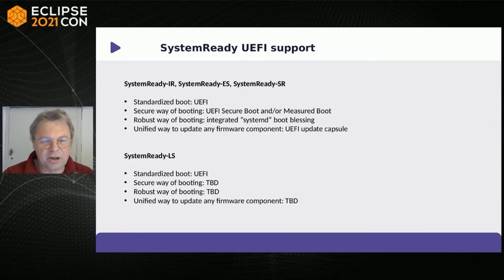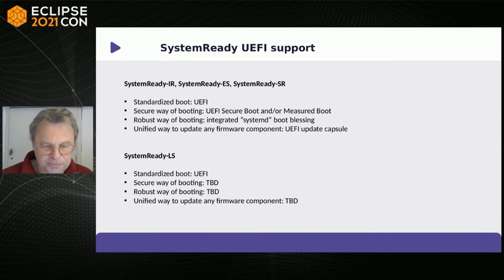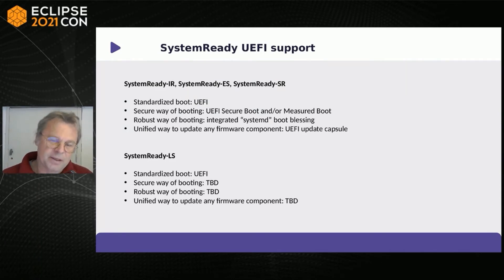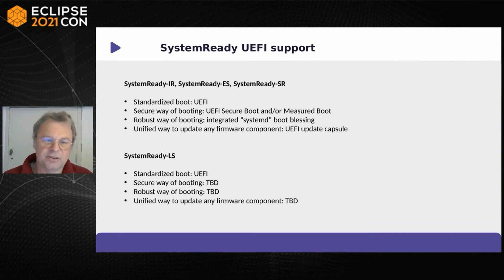For System Ready IR, ES, and SR, there is a standardized boot flow based on UEFI. For secure booting, you have UEFI Secure Boot and Measured Boot, using the same key and signing technologies traditionally used on x86. With additional flexibility for embedded systems that will never run Windows, you don't need any shim or GRUB as an intermediary — you can boot directly with your own keys straight to the Linux kernel.